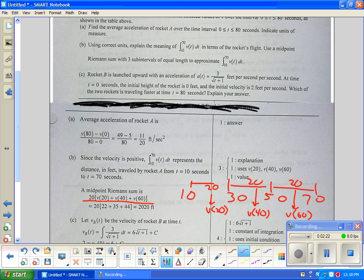And you'll notice they wrote that out right here. That you use those three values is worth a point. And that when you multiply those, add those three up and multiply by twenty, you should get two thousand and twenty feet. You get a point for the value. Units come in later. You should have feet.